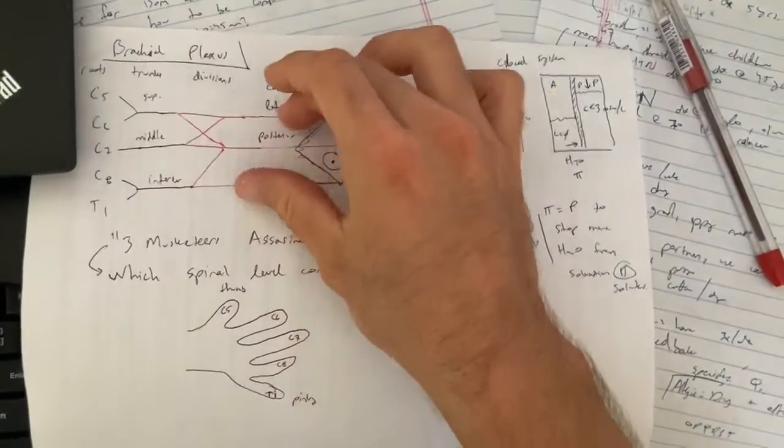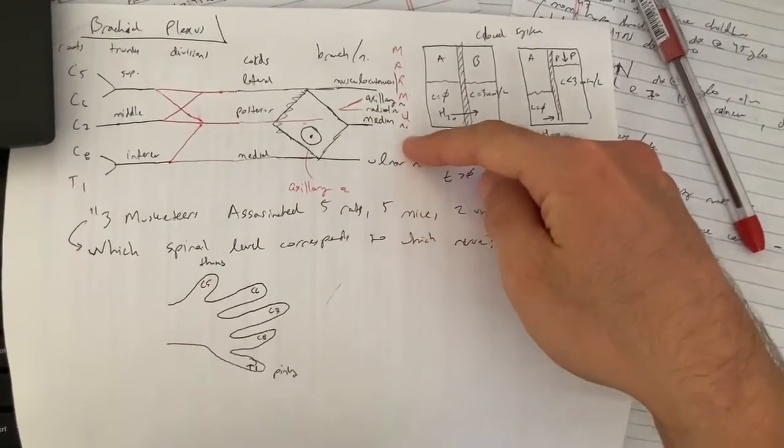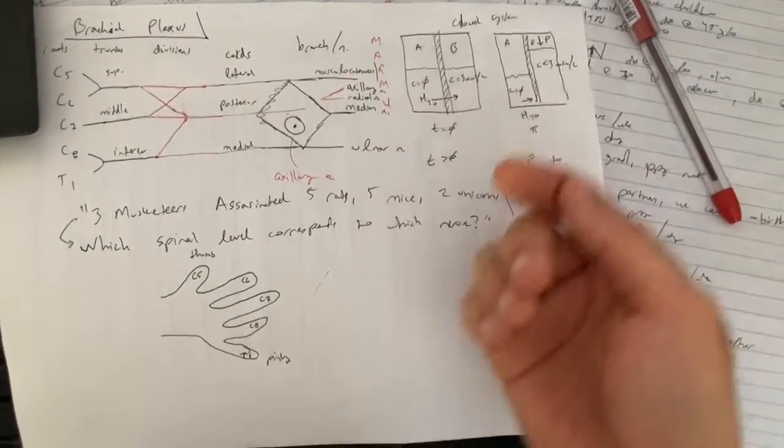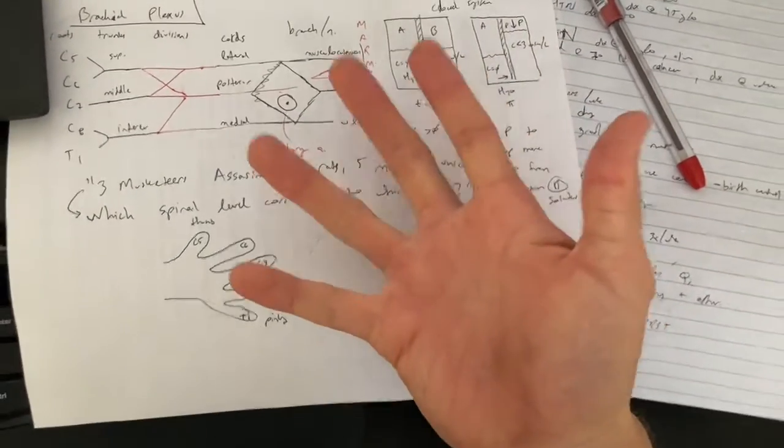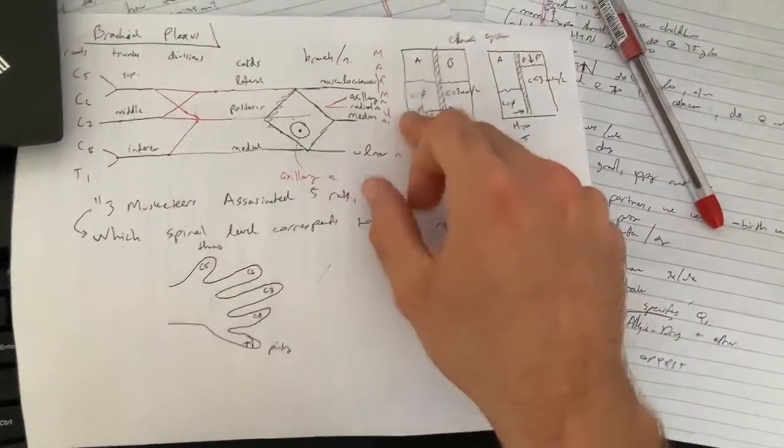If you don't have this whole picture in front of you on an exam but someone asks what is innervating the median nerve, you'll remember five mice and you'll know that the five spinal levels map to that median nerve.